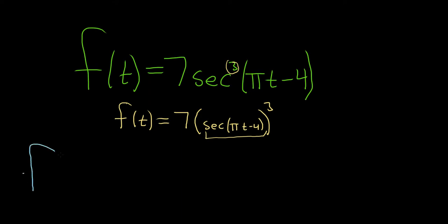So f prime of t is equal to - the 7 hangs out, and we use the power rule. We start by taking the derivative of the outside. So we bring down the 3, so 3 times 7 is 21. We leave the inside untouched. So secant of pi t minus 4.